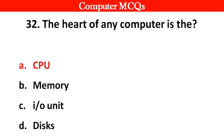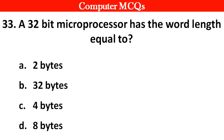A 32-bit microprocessor has the word length equal to: option A 2 bytes, B 32 bytes, C 4 bytes, D 8 bytes. Right answer is option C, 4 bytes.